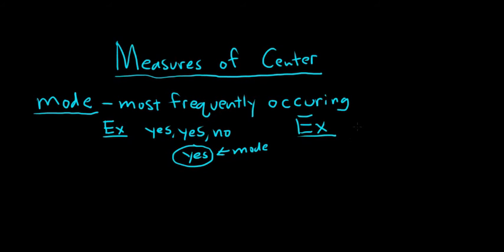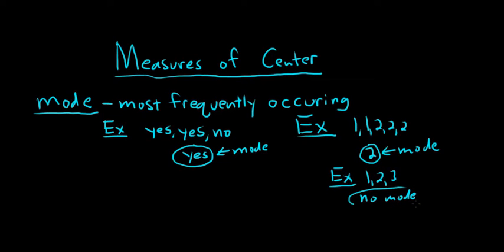Of course, you can also use it with numbers. So if you have 1, 1, 2, 2, 2. In this case, 2 would be the mode because it is the most frequently occurring. You can also have situations where you have no mode. For example, if we had 1, 2, 3, you could say every number appears once. So every number is the most frequently occurring. But for all practical purposes, in this case, we would just say no mode. So the mode is the most frequently occurring. And again, it's advantageous to use when you have data that is not quantitative. So if you have qualitative data, the mode is very useful.